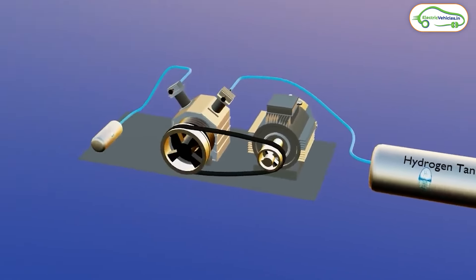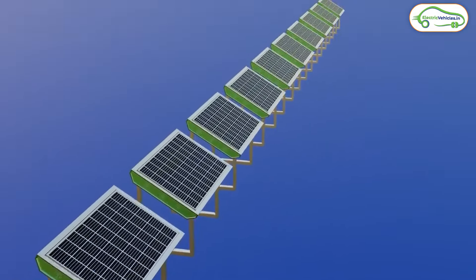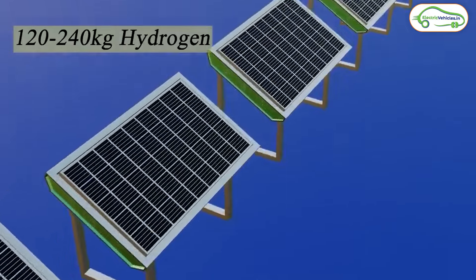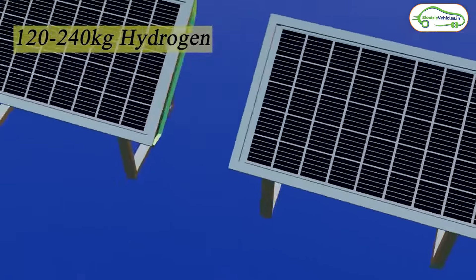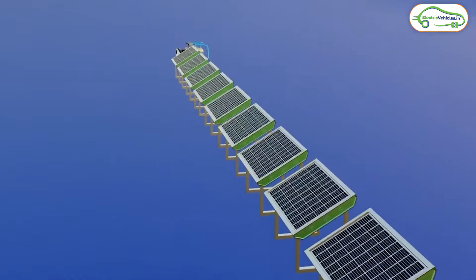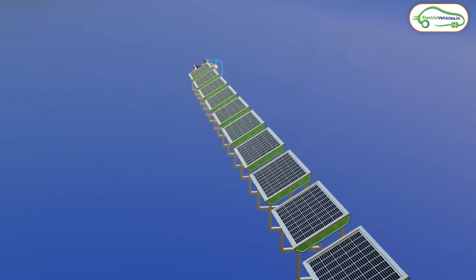To convert this hydrogen into electricity, a fuel cell will be used, but the conversion rate is very less. However, if we install 20 hydrogen panels on our rooftop, these can generate 120 to 240 kgs of hydrogen per year, which equals 4000 to 6000 units of electricity.